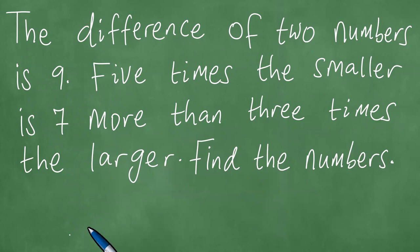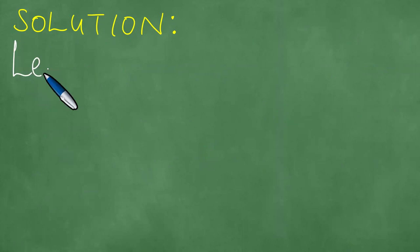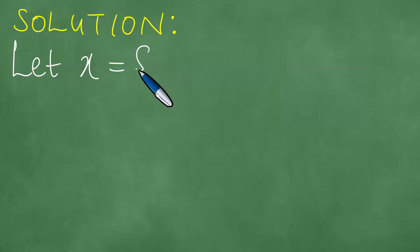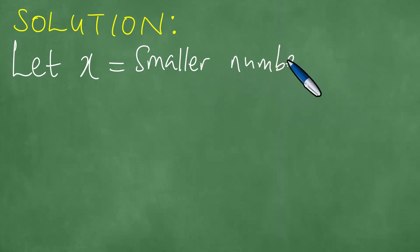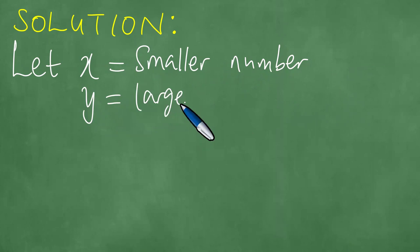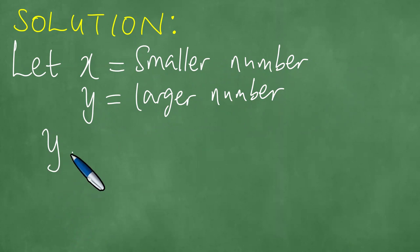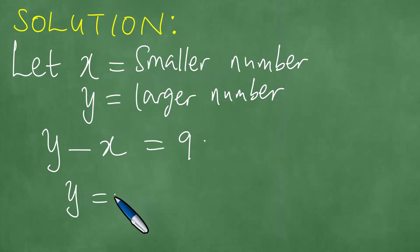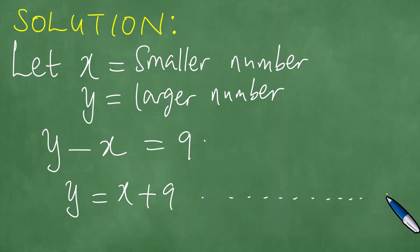We present a solution to this problem step by step. So we let x be equal to the smaller number, and y equals the larger number. The difference is nine, and since the difference is positive, we take the larger minus the smaller, and the result is exactly nine. Transposing x, we have y equals x plus nine. This is the first equation.